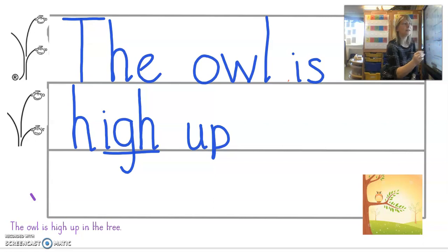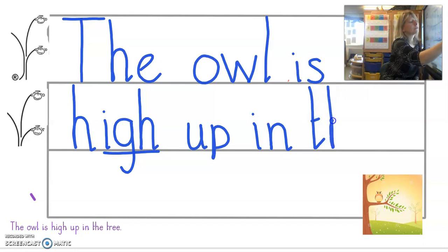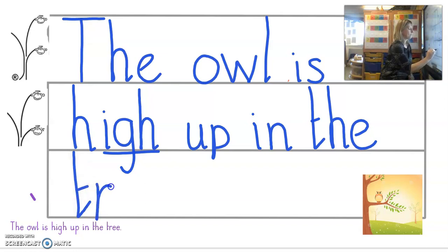Up. Up. Sound that one out, very easy. Up. In. The. We've already done the, but remember it doesn't need a capital letter this time. In the tree. Tree. Tree. It's not a choo sound, it's t-ree. And what does it finish with? A full stop.